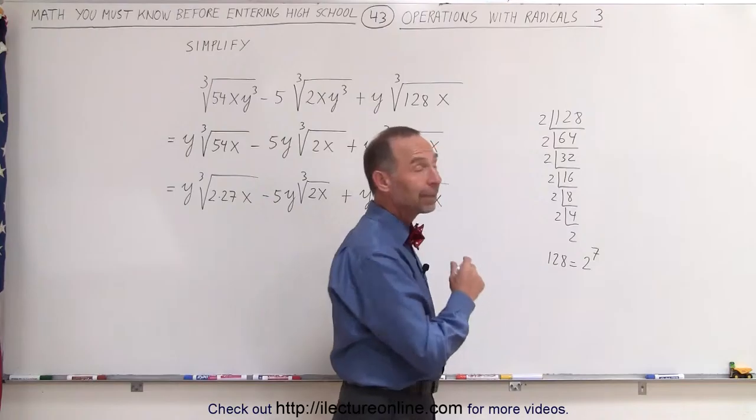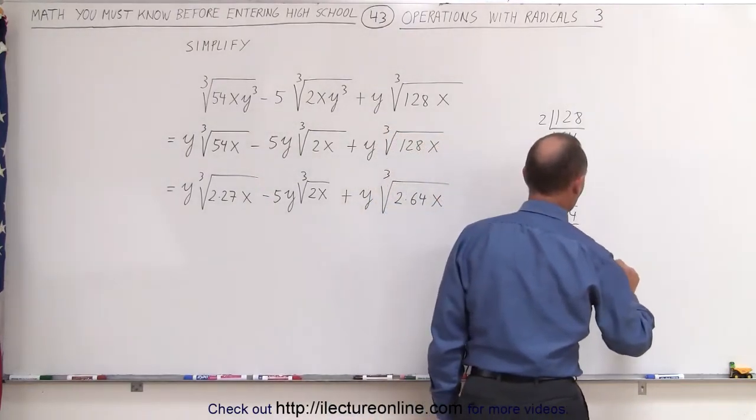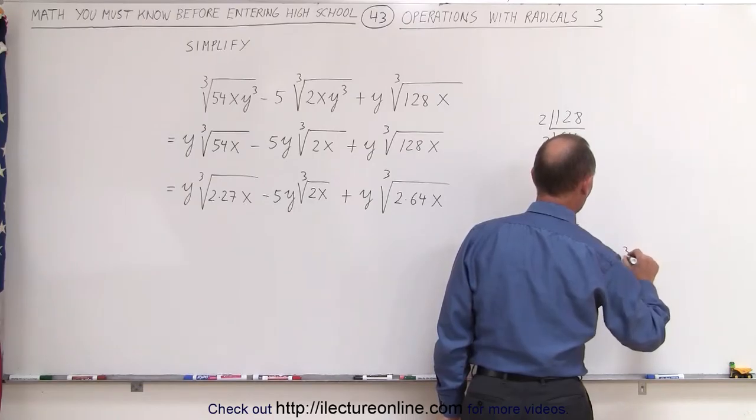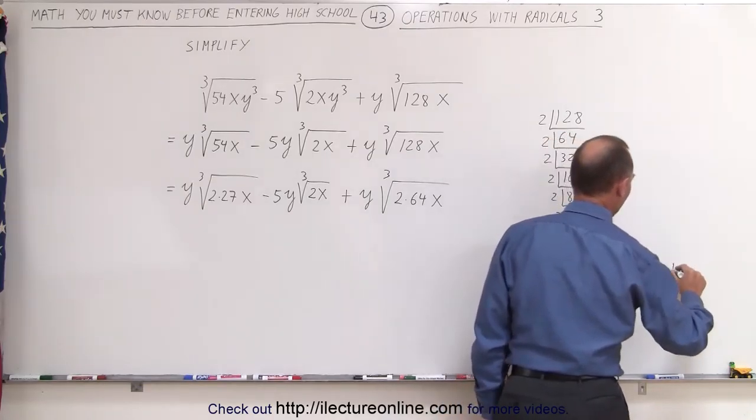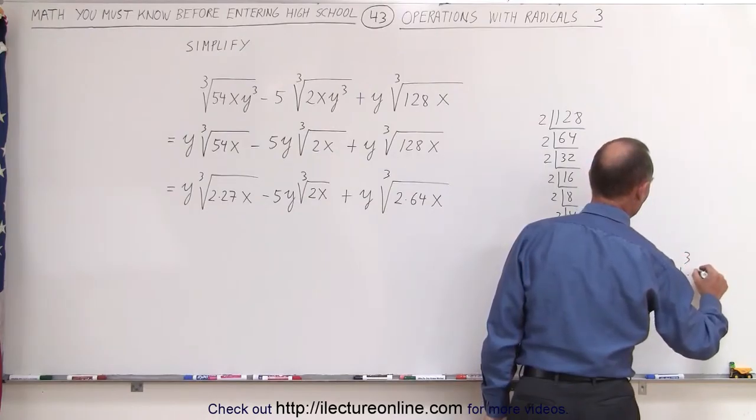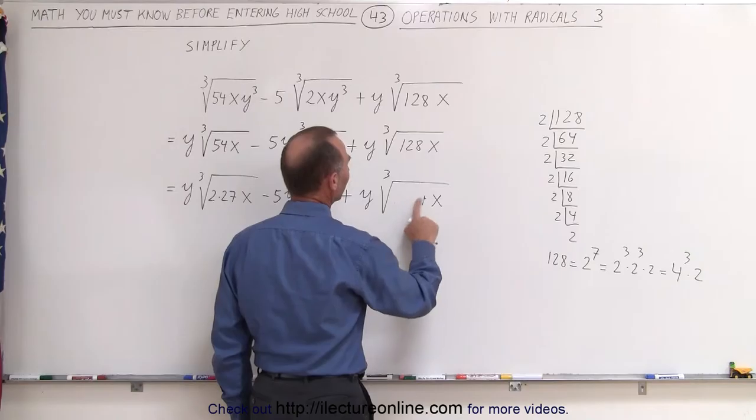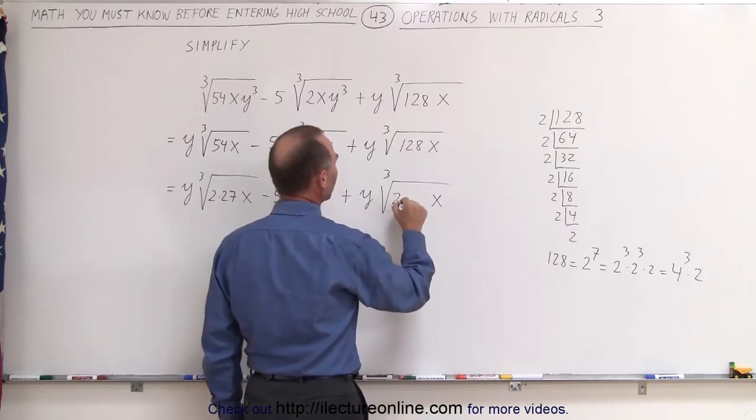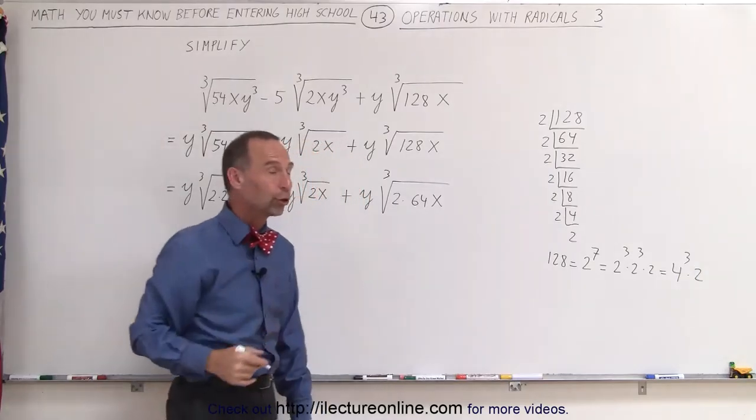7? 8? 9? Yep, that is correct. 2 to the 7th power which means that this can be written as 2 to the third power times 2 to the third power times 2 or 4 to the third power times 2. That's a better way to write it. So yes indeed this can be written as 2 times 64x and 64 is really 4 cubed.